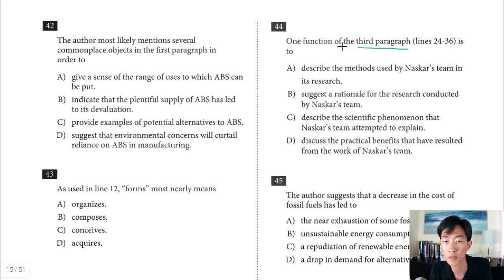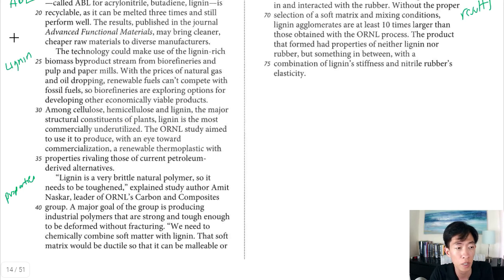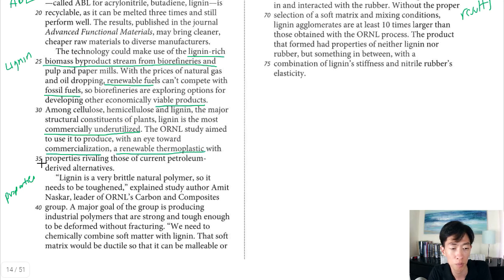Question 44. One function of the third paragraph is to. So let's look at what the third paragraph says. And this is the paragraph that we said is talking about lignin and particularly its uses. It says the technology could make use of the lignin-rich biomass byproduct. So the point here was that because renewable fuels tend to be more expensive than fossil fuels, that using lignin, which is a byproduct from these other industries, might be a good option in making economically viable products. And they're also saying lignin is commercially underutilized. And then here it focuses a little bit more on the study. It says the study aimed to use it to produce, with an eye toward commercialization, a renewable thermoplastic with properties rivaling those of current petroleum-derived alternatives. So really the whole paragraph is talking about the economic impact and it's talking about one of the goals is to create a renewable thermoplastic that has commercial utility and can sort of replace other renewable fuels.